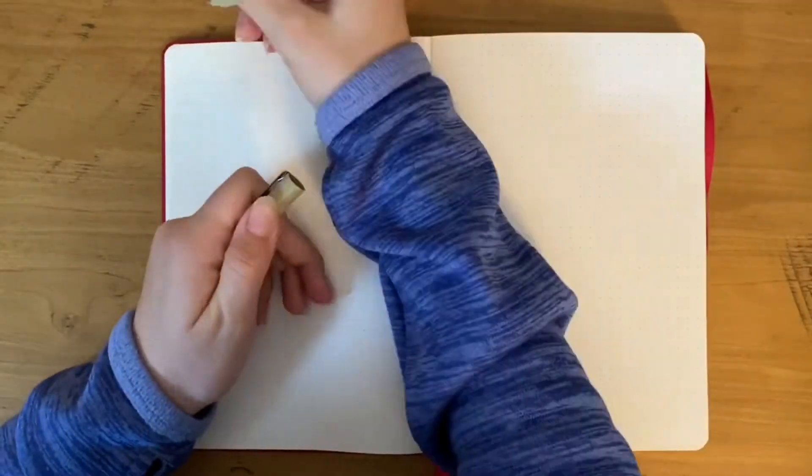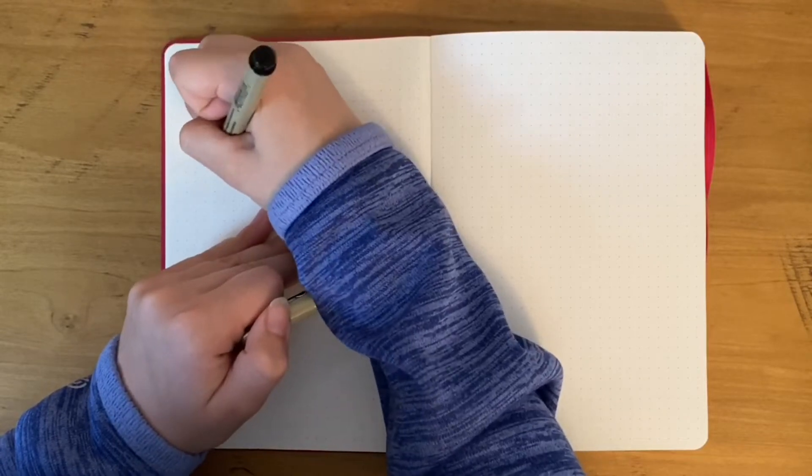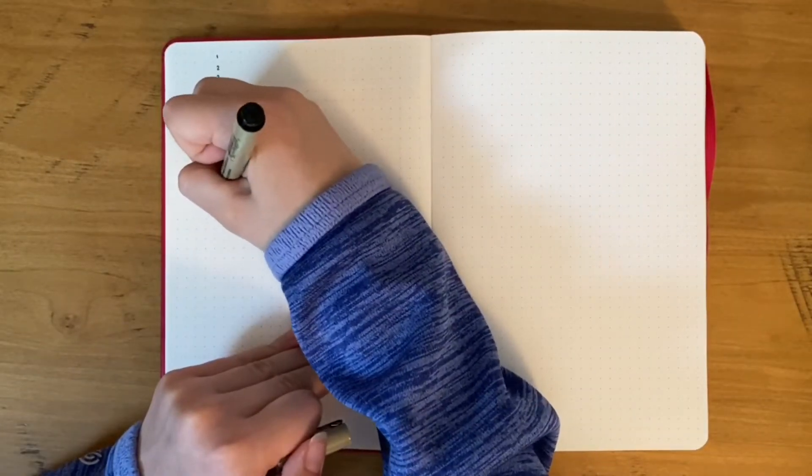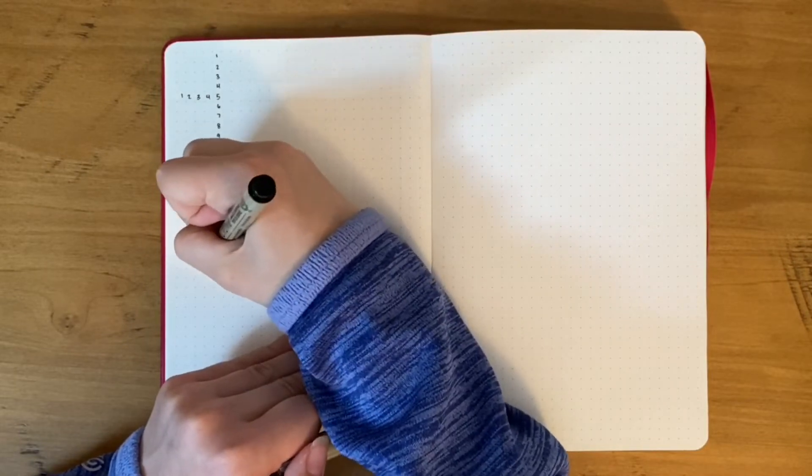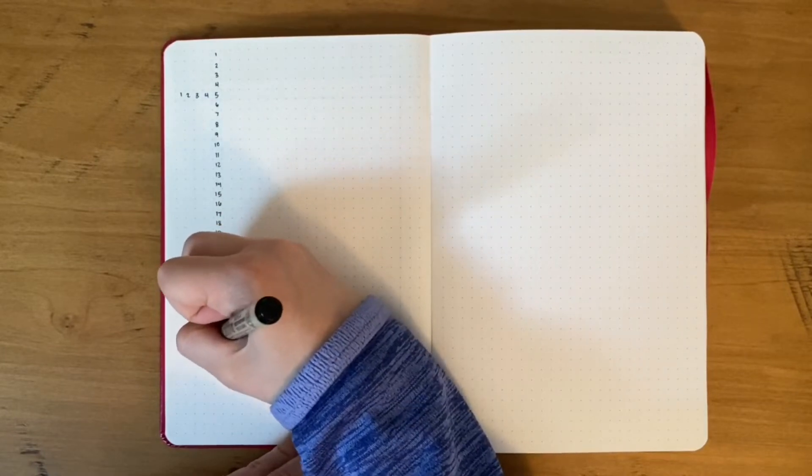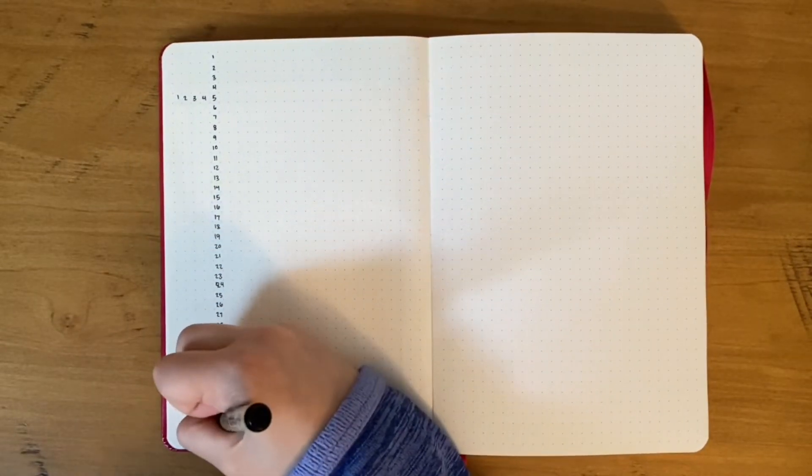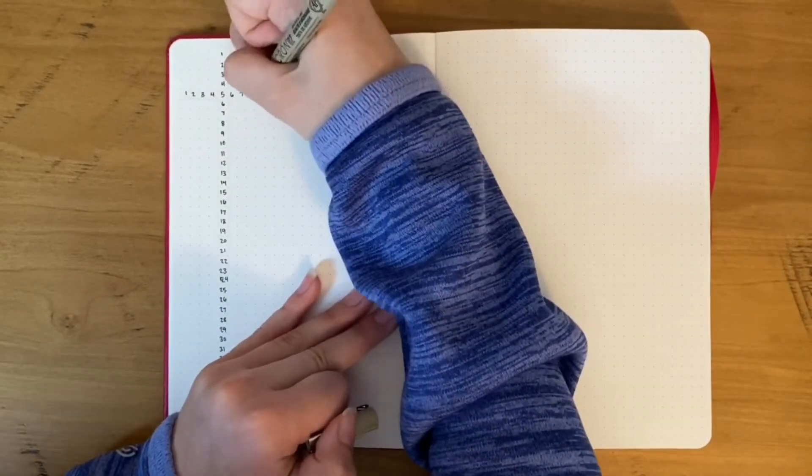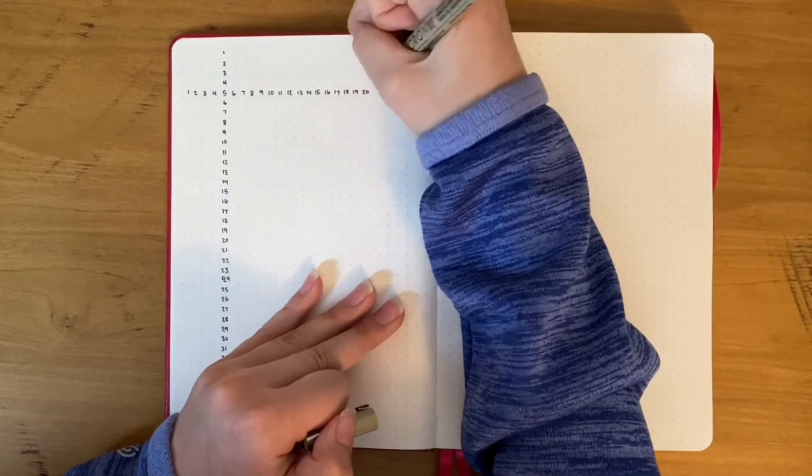This next spread is probably my most used spread in my bullet journal: a grid spacing cheat sheet. Amanda Rach Lee did this in her bullet journal setup a few years ago, and I thought it was the smartest spread you can ever have. I've used this spread in both my bullet journals.